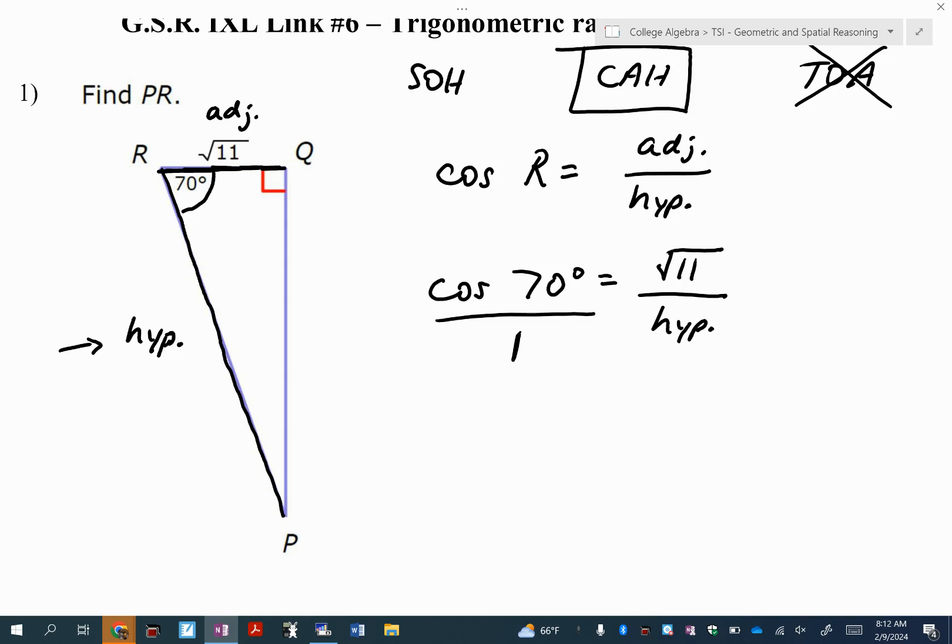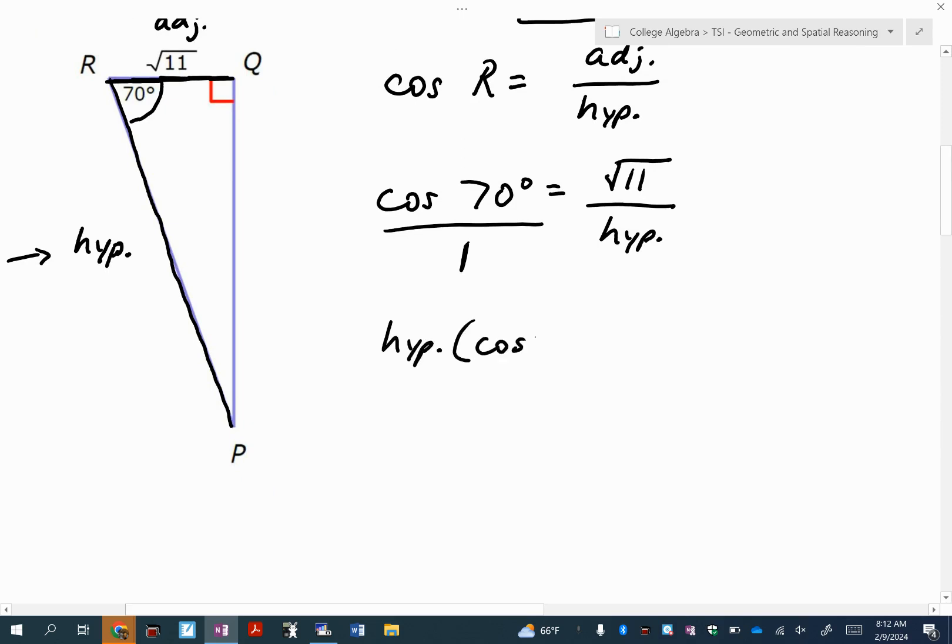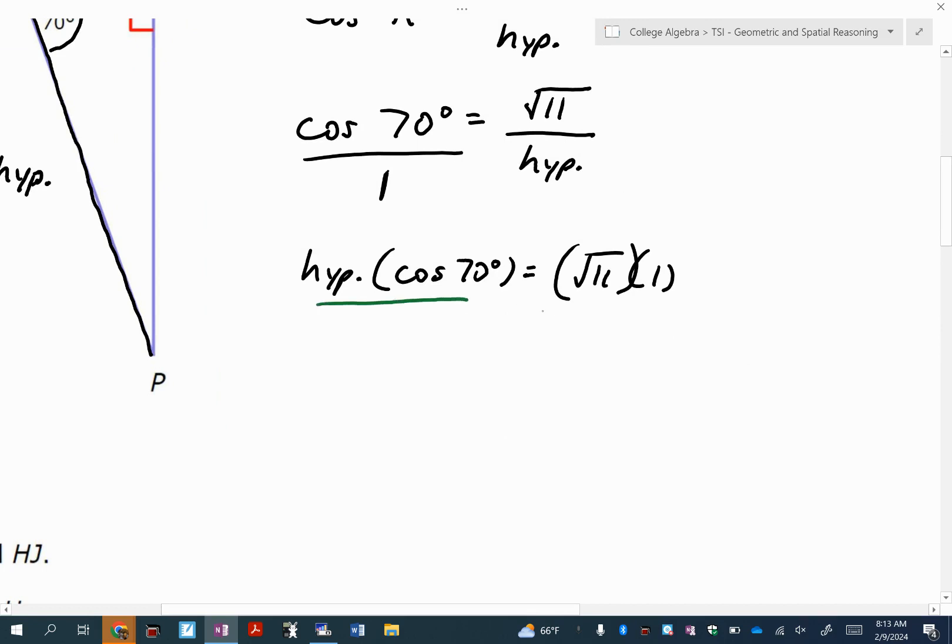So Gabriel said proportion. But we solved this by multiplying diagonally. It's called multiplying diagonally to get cross products. So I multiplied cosine of 70 degrees times the hypotenuse. I'm solving for the hypotenuse is equal to one times the square root of 11. So now if I want to solve for the hypotenuse, what am I going to move to the other side? The cosine of 70 degrees.